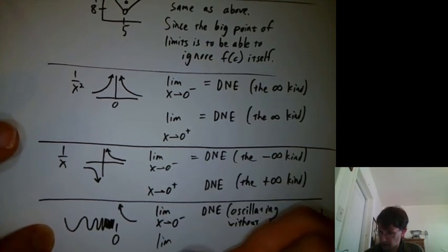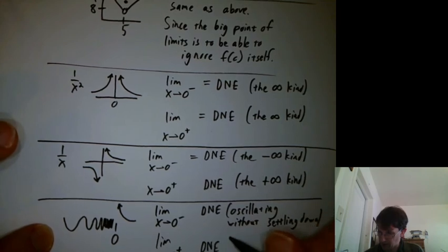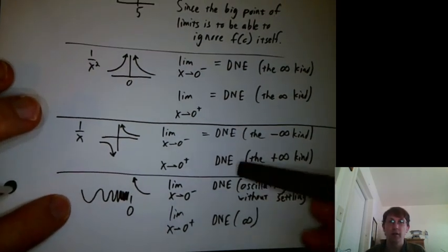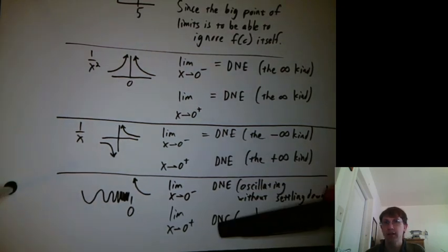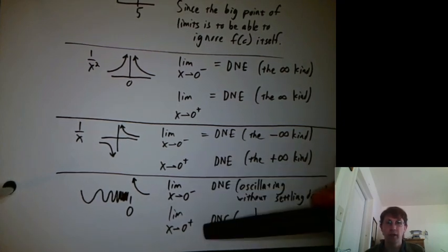And the limit as x goes to zero plus is DNE, the infinity kind. And that's a clear case where DNE and DNE are just not at all equal. So we can't say, oh well, the limit from the left and the limit from the right are equal. So the overall limit exists. That's just not going to fly.